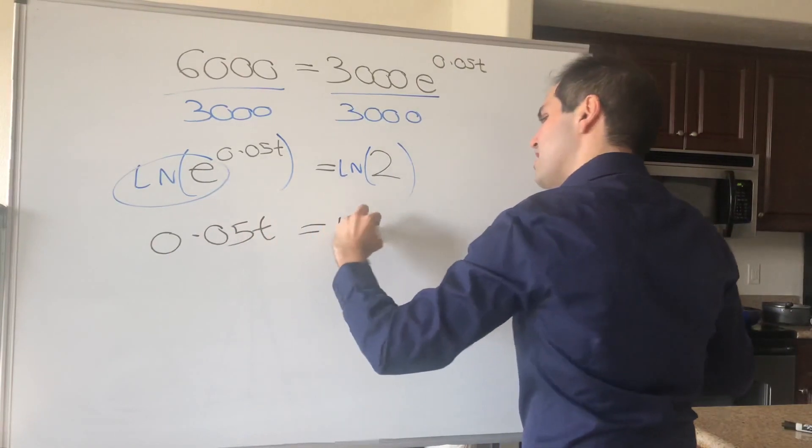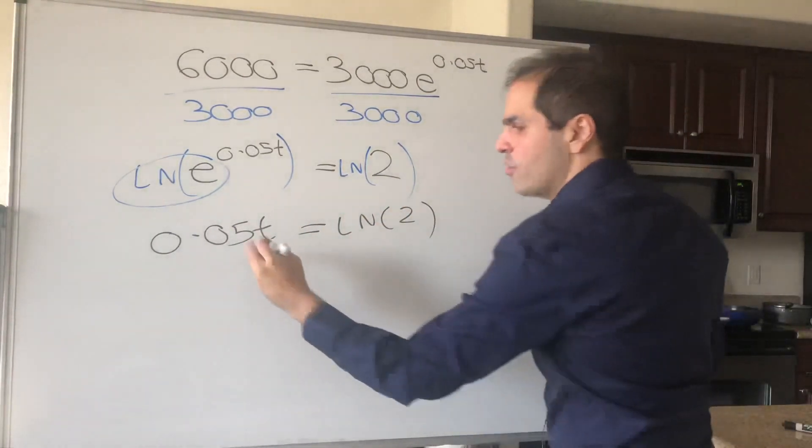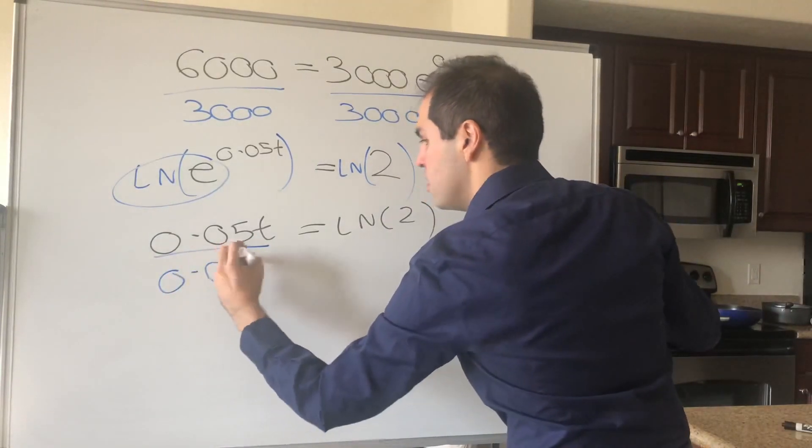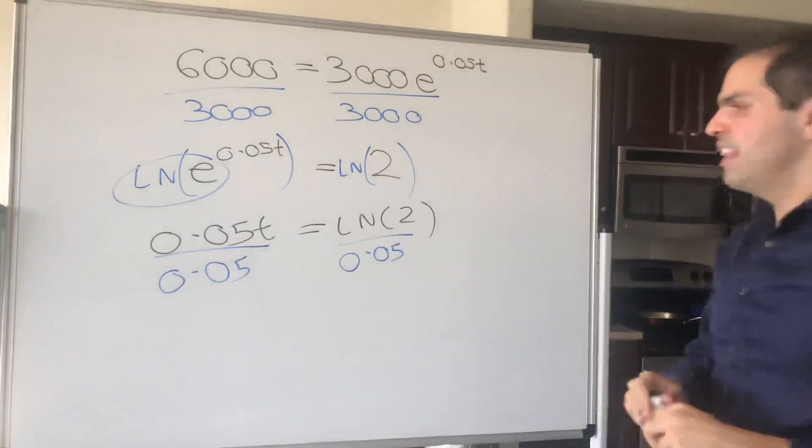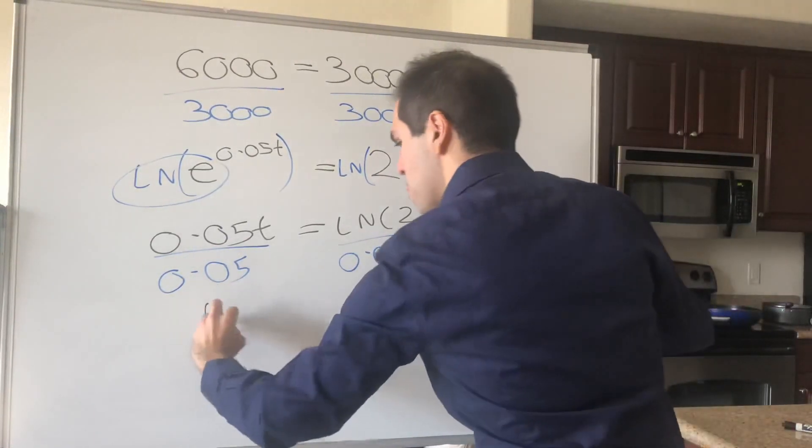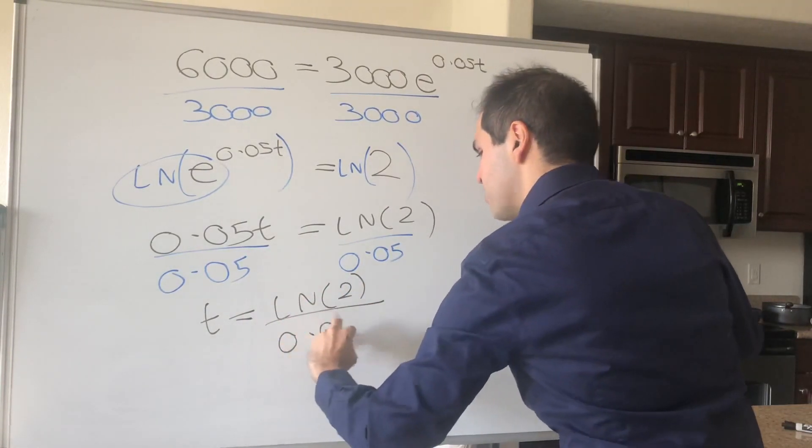And that's LN of 2. And then lastly, we divide by 0.05 to get T equals LN over 0.05, so LN of 2 over 0.05.